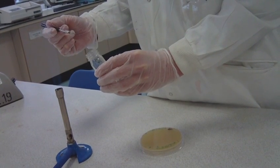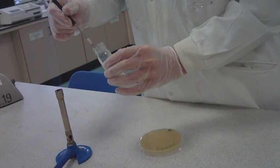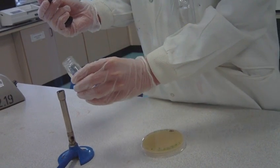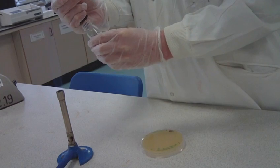Once the bottle is sterile, put the loop into the suspension without touching the sides of the bottle. Remove the loop and then reflame the neck of the bottle before closing the lid to sterilize.